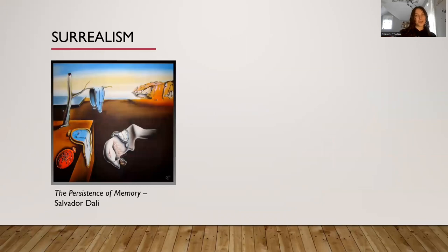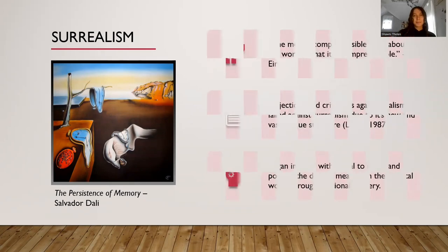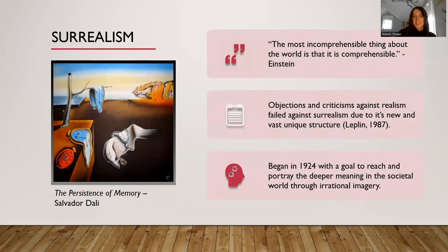First, we go to Surrealism. Below, we can see The Persistence of Memory by Salvador Dalí, where we can see that really irrational, unrealistic display that Surrealism had. This began in 1924 with a goal to reach the deeper societal world meaning, and when it came to critics, they failed to critique any part of Surrealism because of the vast meaning it had.